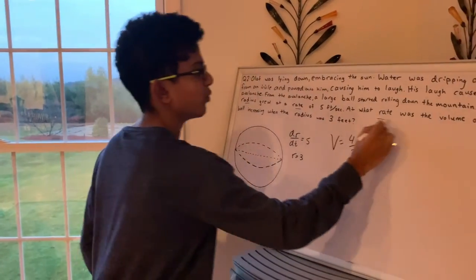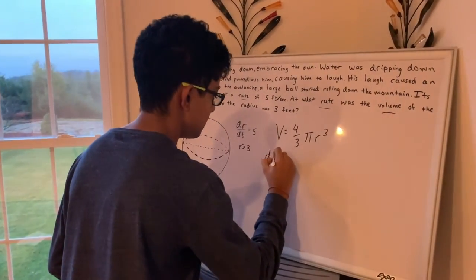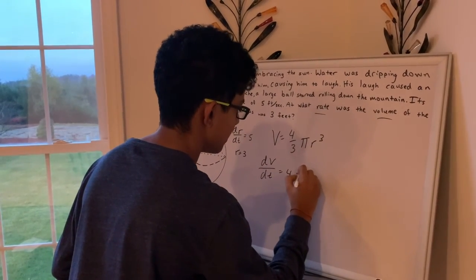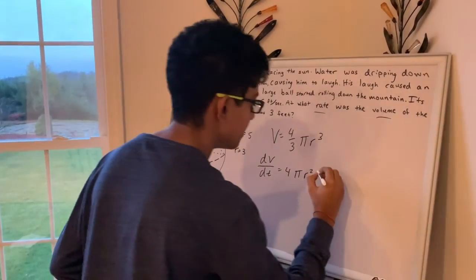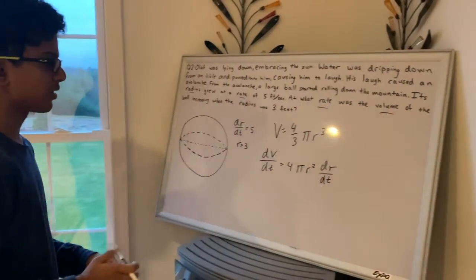And it says at what rate was the volume, so that means we have to calculate the derivative, which would be dv over dt equals 4 pi r squared. This 3 comes down because of the power rule, dr over dt.